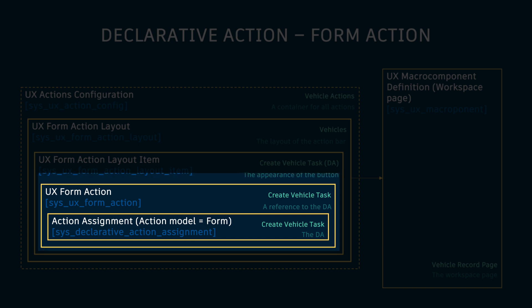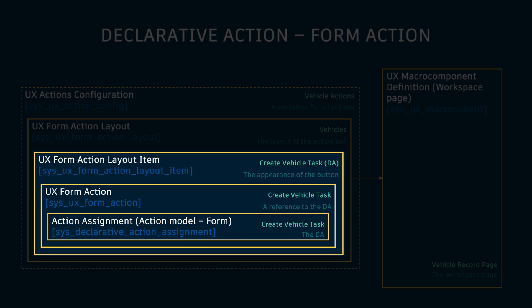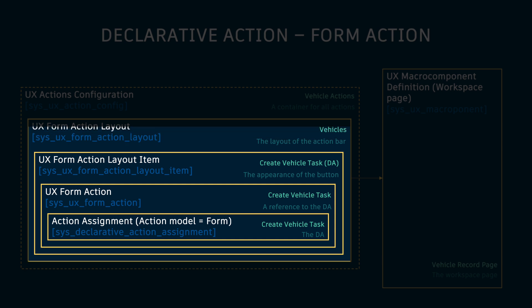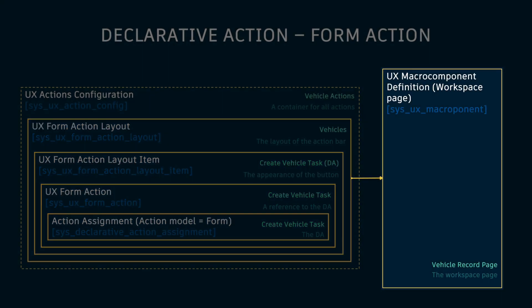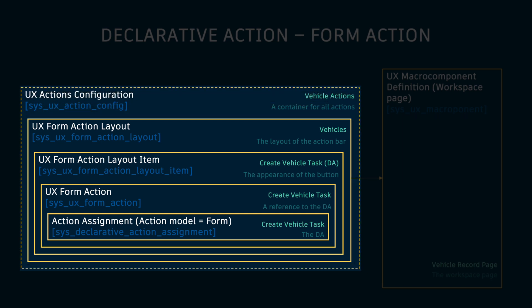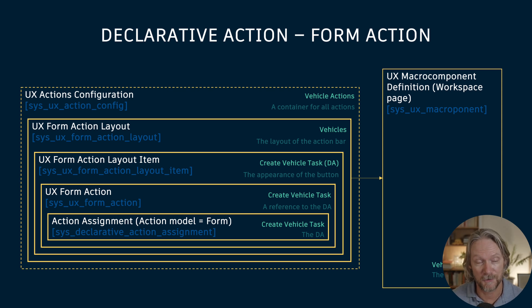For these form actions, we need to specify a layout item, which defines the appearance and size of the button. That layout item belongs to a specific layout, which is the layout of the action bar itself that you reference in the workspace page. The components on the left-hand side are grouped together in a meta-container called a UX Actions Configuration — it has no logic of its own, but acts as a container for UI Actions, declarative actions such as form actions, field decorators, related list actions, and so on, all in one spot. In the next video, we're going to create a declarative action together using these components, so stay tuned.